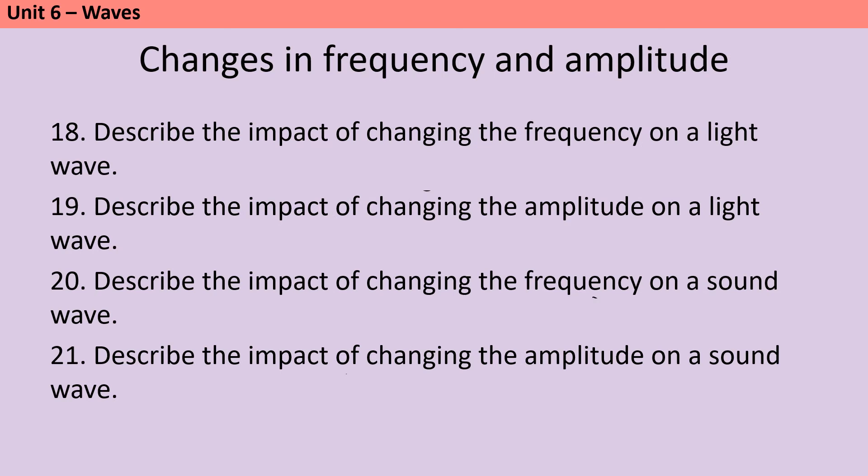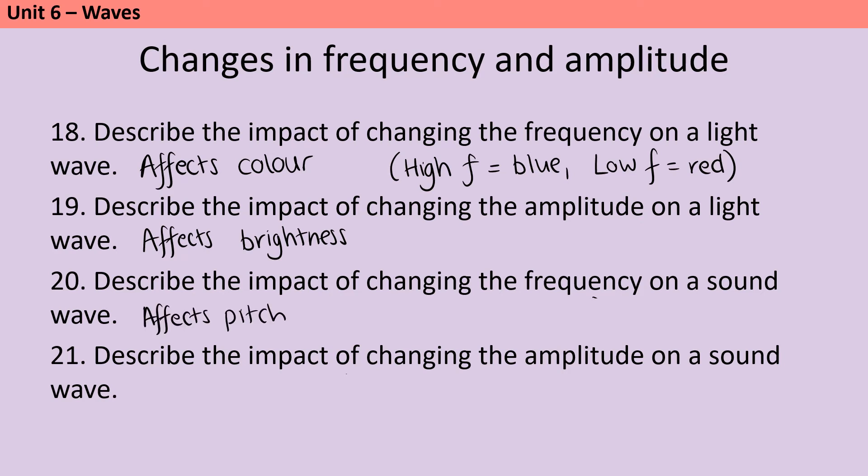If you change the frequency of light, then this affects the color. So a high frequency light would be blue, whereas a low frequency light would be red. Changing the amplitude of a light wave will affect its brightness because amplitude is a measure of how much energy a wave is carrying. If you change the frequency of a sound wave, you affect its pitch. So a high frequency is a high-pitched sound and a low frequency is a low-pitched sound. And if you change the amplitude of a sound wave, because it's affecting the amount of energy that's carried, that affects its volume.